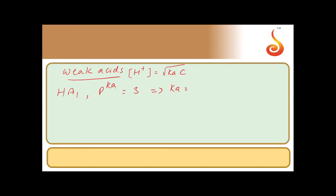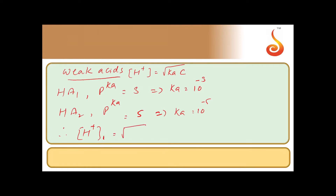For HA1, pKa = 3 implies Ka = 10⁻³. For the second weak acid HA2, pKa = 5 implies Ka = 10⁻⁵. Therefore, the concentration of H⁺ from acid 1 is √(10⁻³ × C), and the concentration of H⁺ from acid 2 is √(10⁻⁵ × C).